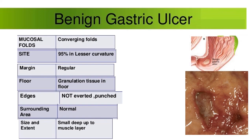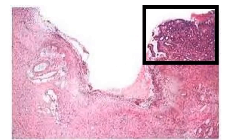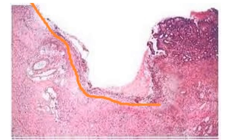When you see the biopsy, there is normal mucosa on the right side, and the ulcer is visible — indicated by the orange line. There is granulation tissue in the base, which means proliferation of blood vessels and fibroblasts.